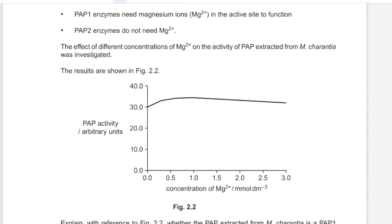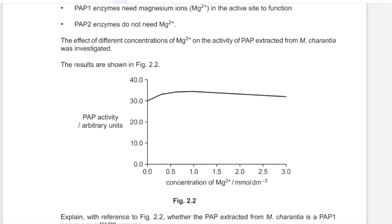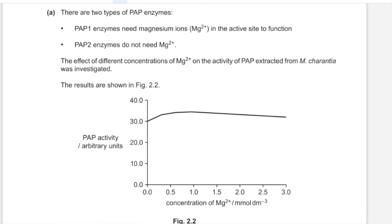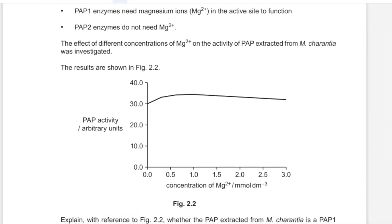The effect of different concentrations of magnesium ions on the activity of PAP extracted from the Bittergard species (Momordica charantia) was investigated. The results are shown in Figure 2.2. Increasing the magnesium ion concentration has little to no effect — activity increases from around 3 units to some extent and then remains constant. Initially, when magnesium ion concentration was zero, the enzyme was still active at around 30 units.